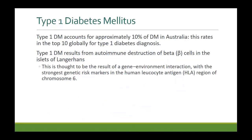Looking at Type 1 diabetes, 10 percent of all diabetic patients in Australia are Type 1. Australia actually ranks quite high globally for Type 1 diabetes diagnoses.